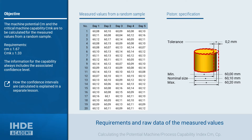Since the calculation methods are the same, we only consider the machine here as a representative. The machine potential CM should be at least 1.67 and the machine capability should be greater than or equal to 1.33. From the current production, 20 samples were taken and measured on five different days. The measured diameter of the piston was entered in the table. The nominal size is 60.1 mm with an allowable tolerance of plus/minus 0.1 mm.